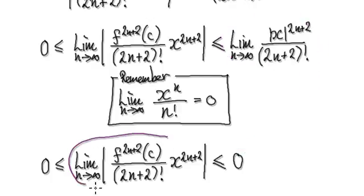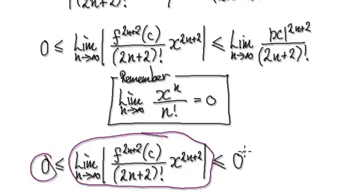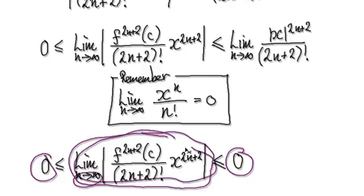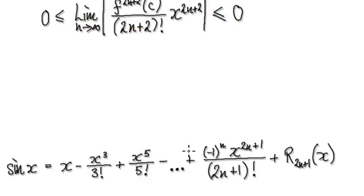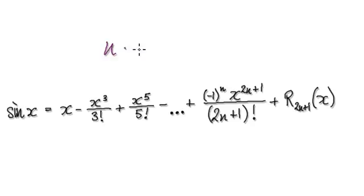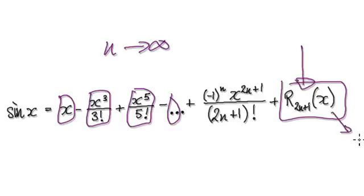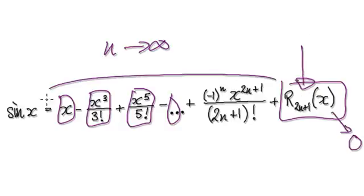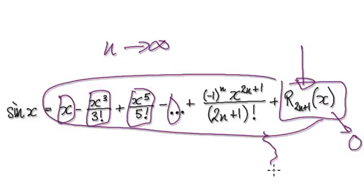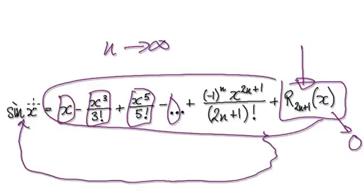So this thing here, which is our remainder — we know nothing about our remainder, but we know that it's trapped in between zero and zero. So as n tends to infinity, our remainder will be zero. What that means is: as you keep on adding all these terms all the way to infinity, the remainder will head towards zero. Meaning the whole series, as you head towards infinity, will be equal to exactly sine of x, because the remainder heads towards zero.